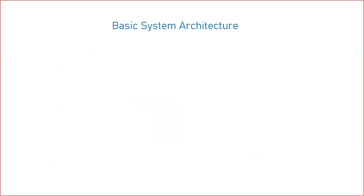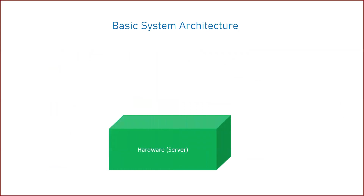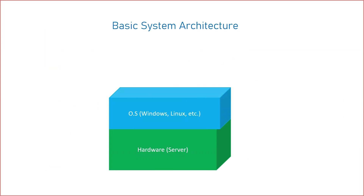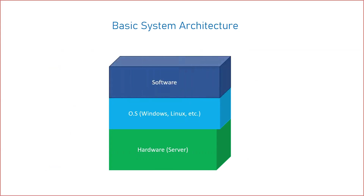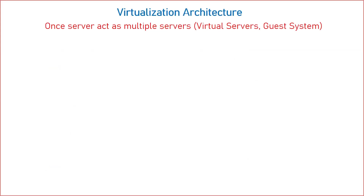Let us talk about the basic system architecture. For any laptop, computer, or desktop, we have hardware, and on top of the hardware we install our operating system — whether Windows, Linux, or whatever. On top of that we install different software. This is the basic architecture of a machine. But when we talk about virtualization, where one server acts as multiple servers, we have a single physical server that can be divided into multiple virtual machines which will act as independent machines for end users.